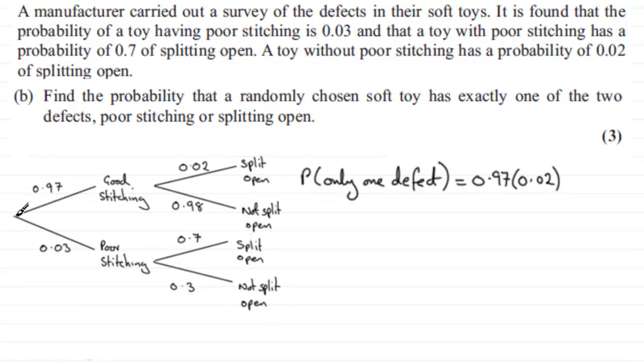So therefore it's going to be 0.03 multiplied by 0.3. And because this is a mutually exclusive event, we would add it to this probability. So we've got 0.03 multiplied by 0.3.